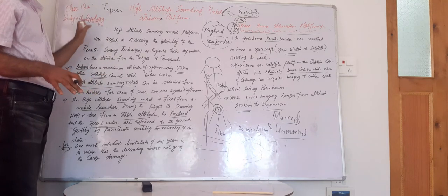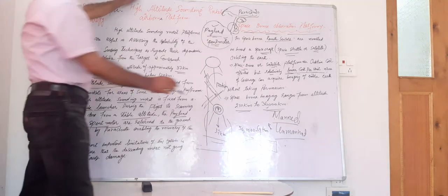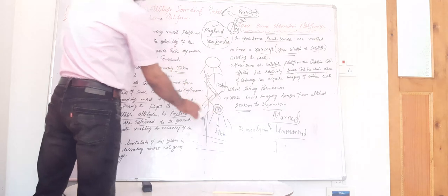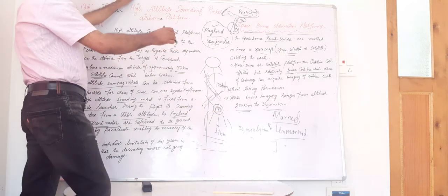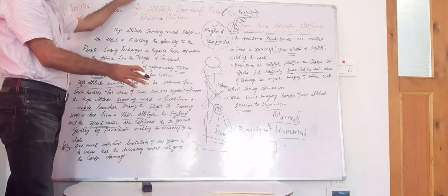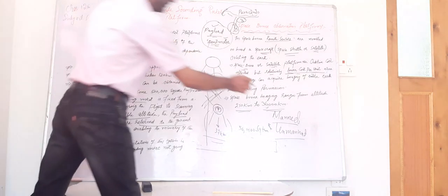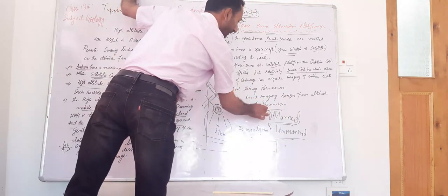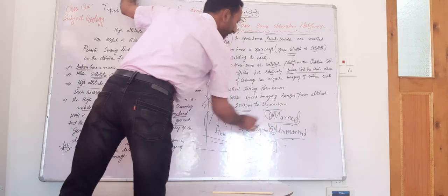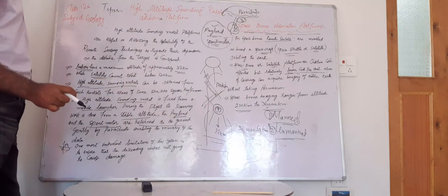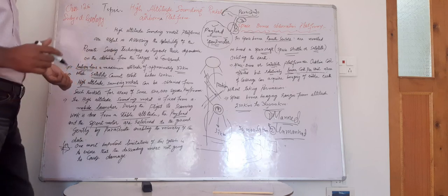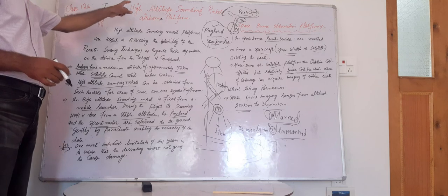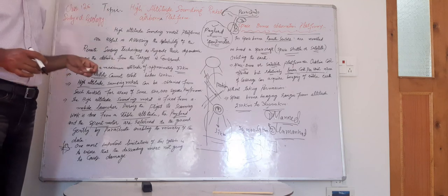This was the introduction regarding the spaceborne observatory platform. In the next class, we will discuss the advantages of the observation platform and two types of satellites: manned and unmanned satellites. For today's class, we have discussed the high altitude sounding rockets and introduction to spaceborne observation platforms.